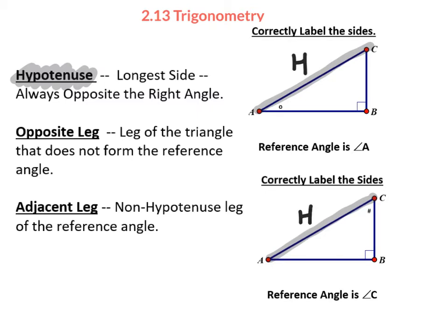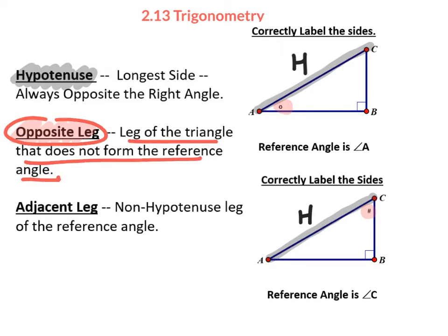The other names are relative to what we call the reference angle. The opposite leg is the leg of the triangle that does not form the reference angle. So here and here are our reference angles, and the opposite side is the leg that is not part of forming that angle.